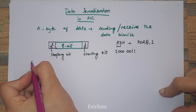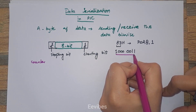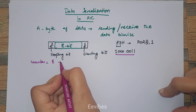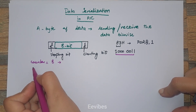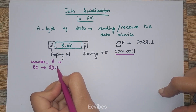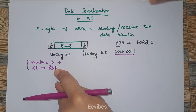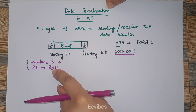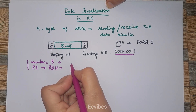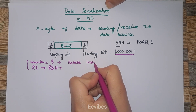To implement this, we need a counter that will keep monitoring whether we have sent all the bits or not. We will initialize this counter equal to 8. We also need to reserve a register — let's call it R1 — that will store the value 83 hex. Data serialization in the PIC microcontroller is implemented using the rotate instructions.